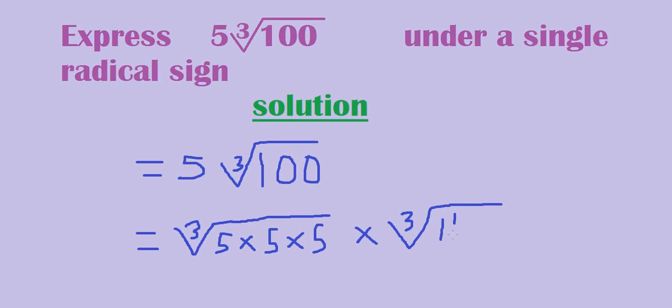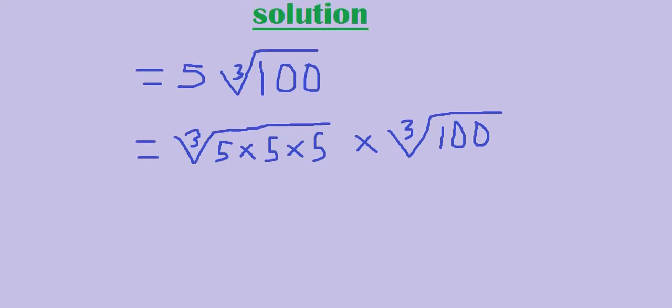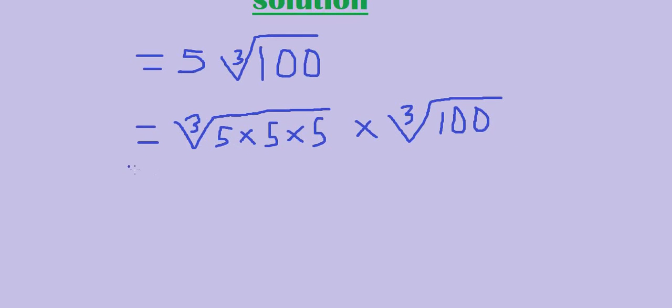The cube root of 100, which we are given in the question. We can join these together under the same cube root, so it will be 5 times 5 times 5 times 100.